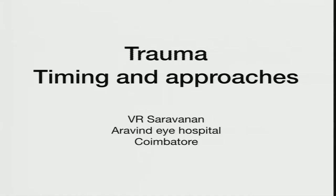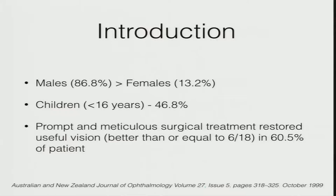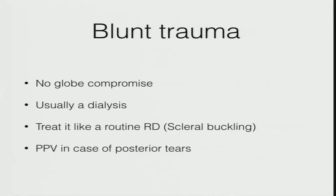Next, Dr. Saranan will speak on when to time posterior segment intervention in a patient with open globe trauma. As an introduction: men are more prone to injury, especially in younger age groups. It is critical to identify the type of trauma — penetrating, blunt — whether there is a foreign body, infection, or detachment. These factors will help maximize visual outcome and decide when to intervene.